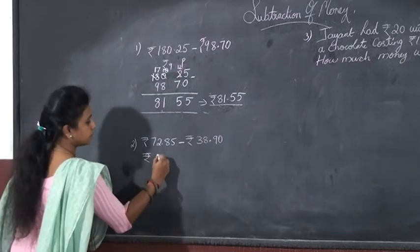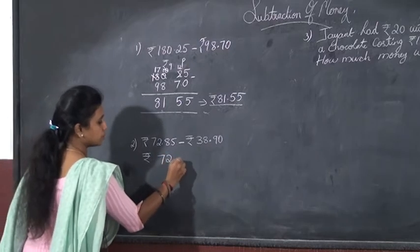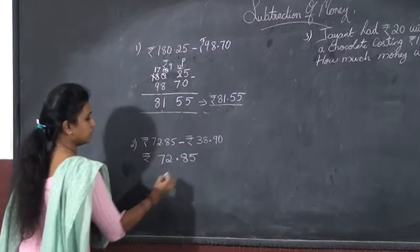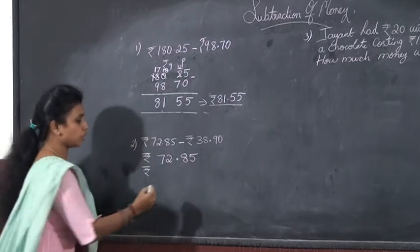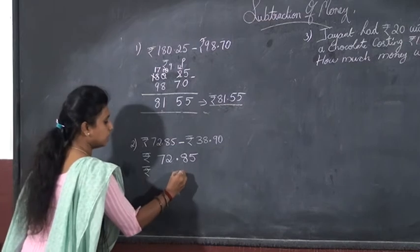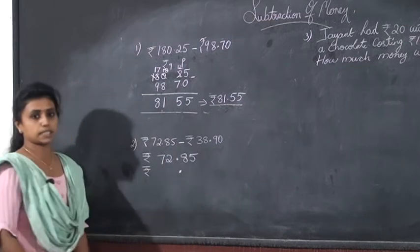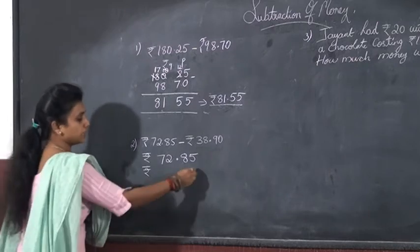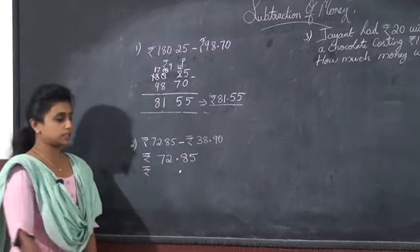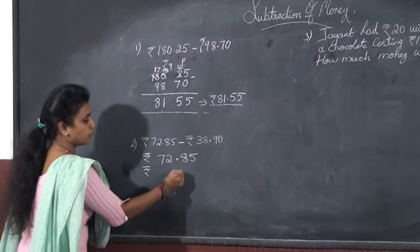Rupees 72. Put the dot. 85. Then, rupees. In the end, first put the dot here. One below the other. Then, write the numbers, the digits that are here. I want to give one below the other. All right?